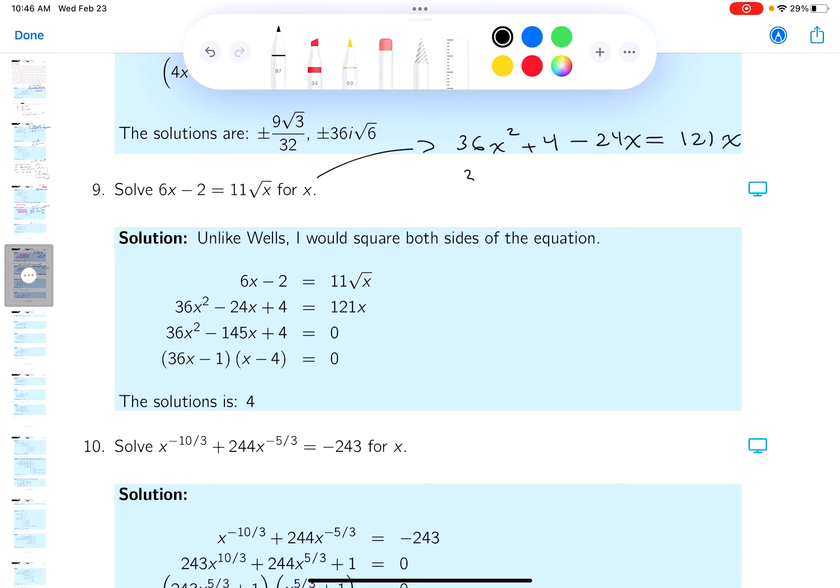Well, I'm going to keep going. 36x² minus, well let's see what you're going to get, 145x plus 4 equals 0.